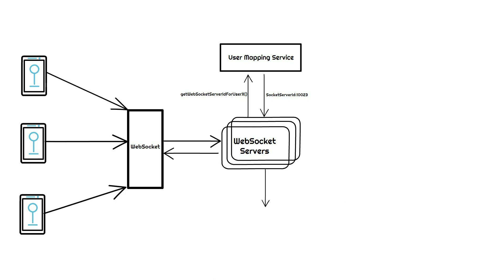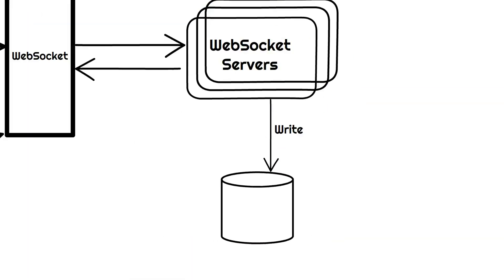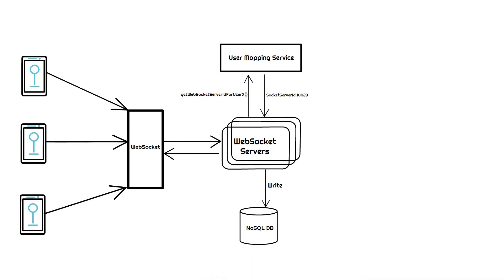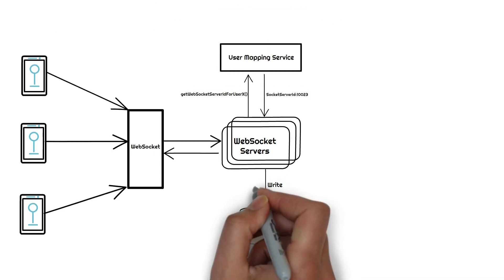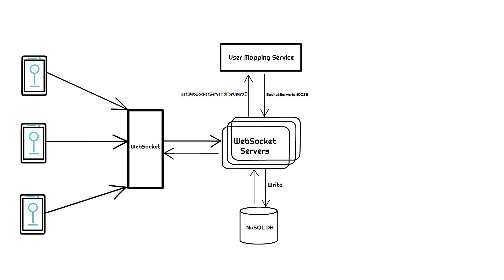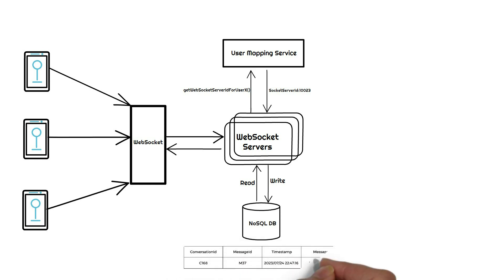There should also be a database to store the messages and other information. I've decided to go with a NoSQL database because of the data volume we saw earlier. The major part of the data would look something like this: a conversation ID, message ID, a timestamp, and the actual message.